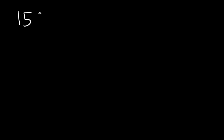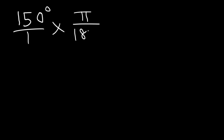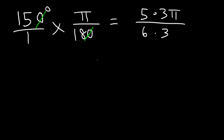Let's try another example: convert 150 degrees into radians. Multiply 150 by π over 180. Getting rid of a zero gives 15π over 18. Since 15 is 5 times 3 and 18 is 6 times 3, we cancel a 3, giving a final answer of 5π over 6.